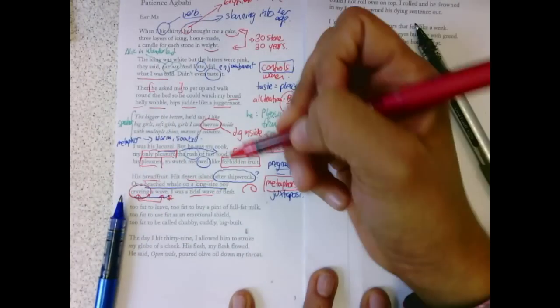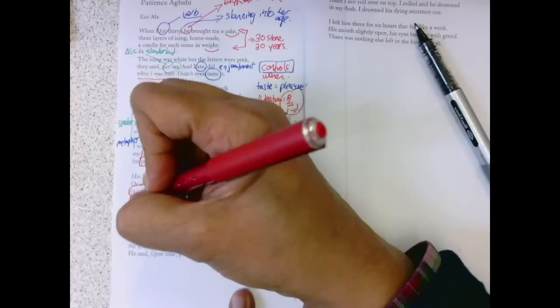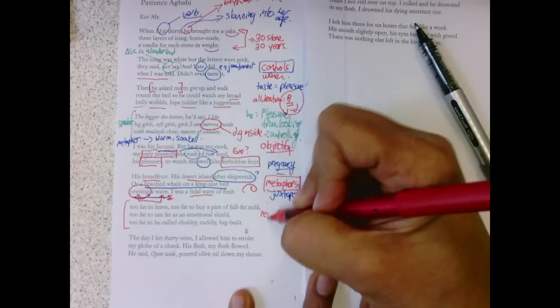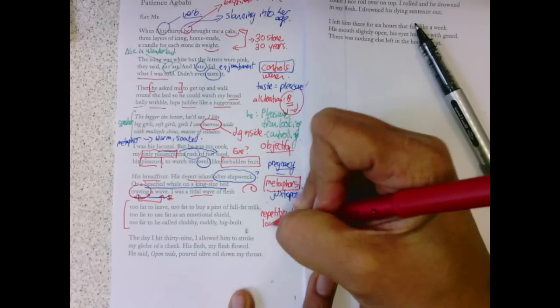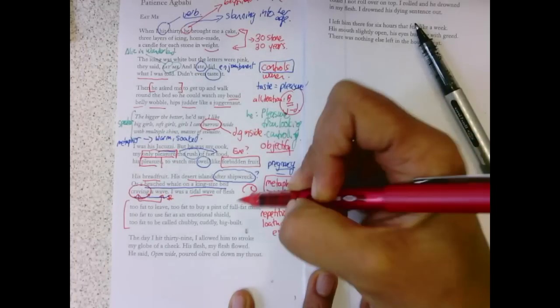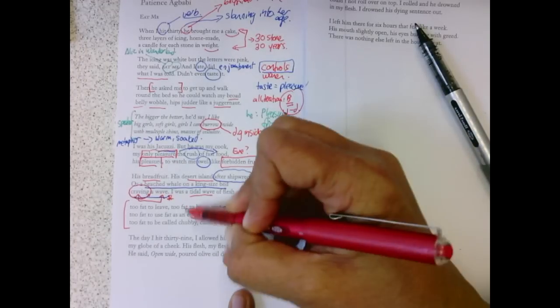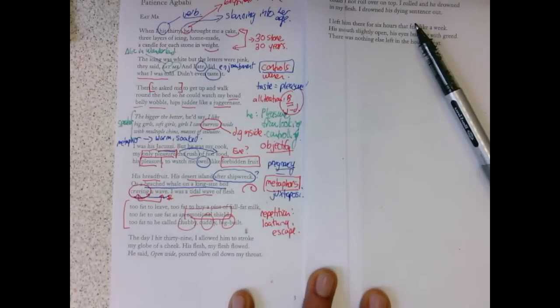Too fat to leave. Too fat to buy a pint of full-fat milk. Too fat to use fat as an emotional shield. Too fat to be called chubby, cuddly, well-built. The repetition here is self-loathing, a need for escape. She can't hide behind these words for fat. She was excessive. It was beyond.